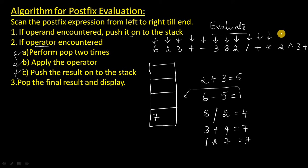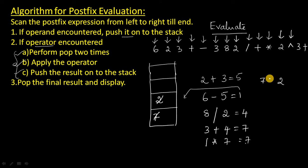And the next one is 2 — 2 is an operand, so add it to the stack. Next one is the power operator — this caret symbol is nothing but power, so it is an operator. Pop this 2 from the stack and pop this 7 from the stack, and apply the operator. That is 7 to the power 2, which is 7 squared — that is 49. Push that 49 to the stack, removing the 7 and 2.